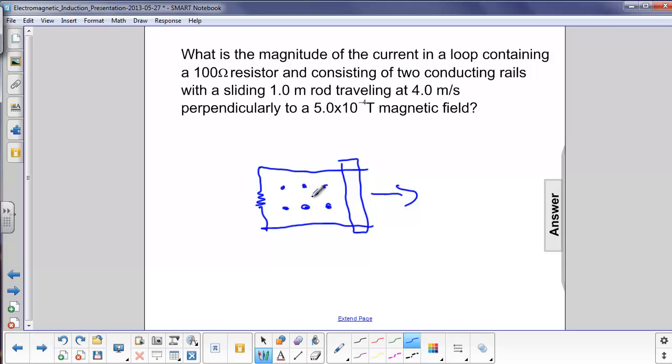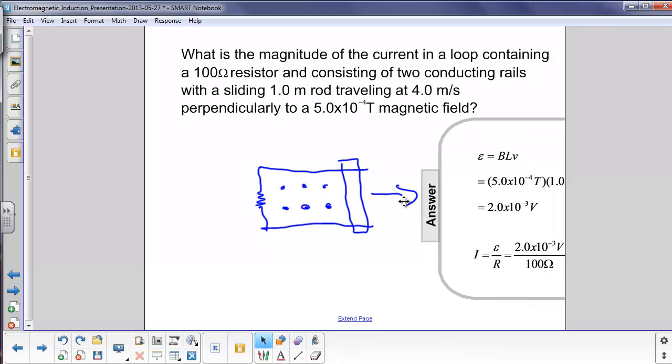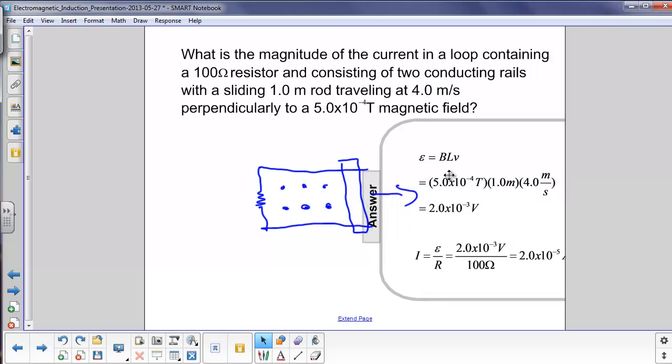The magnetic field is perpendicular to the velocity that the bar here is moving at. So we can just use this equation right here. The EMF is B times the length, which is this distance here, times velocity.